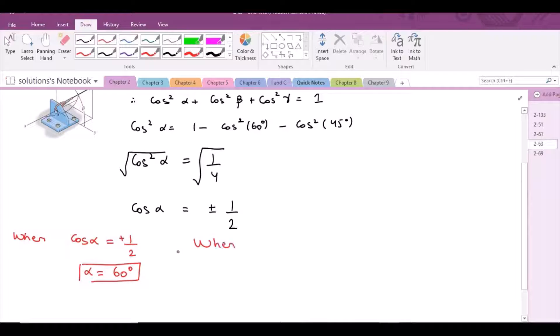And when cos α is negative 1/2, alpha would be 120 degrees.